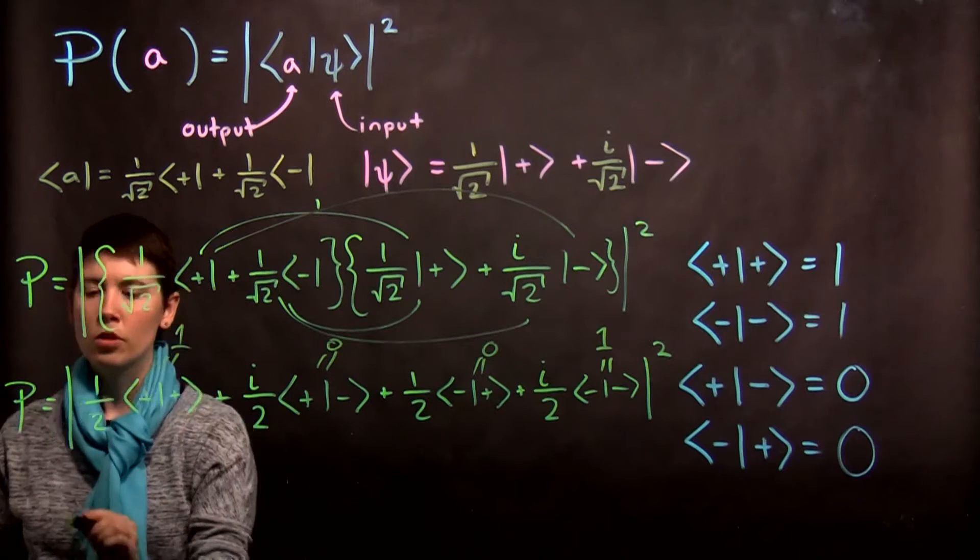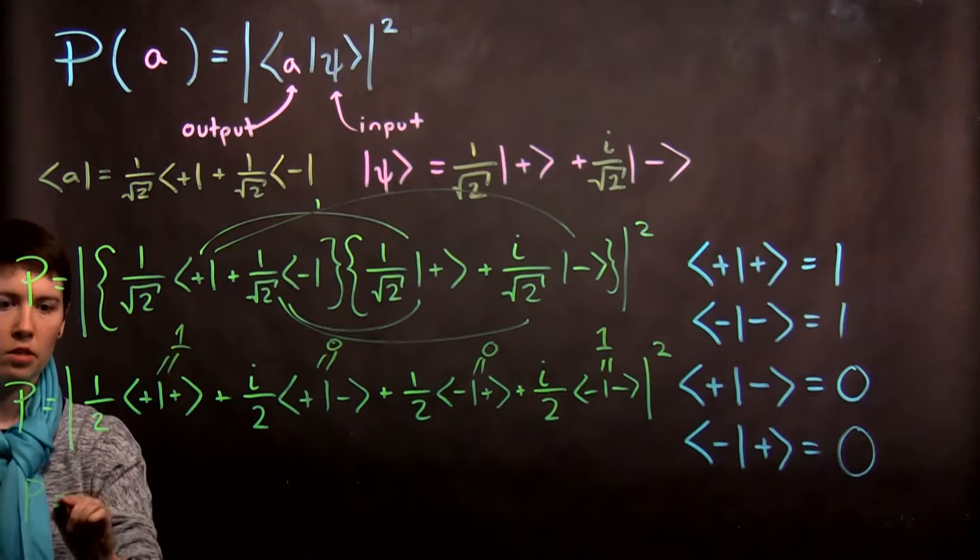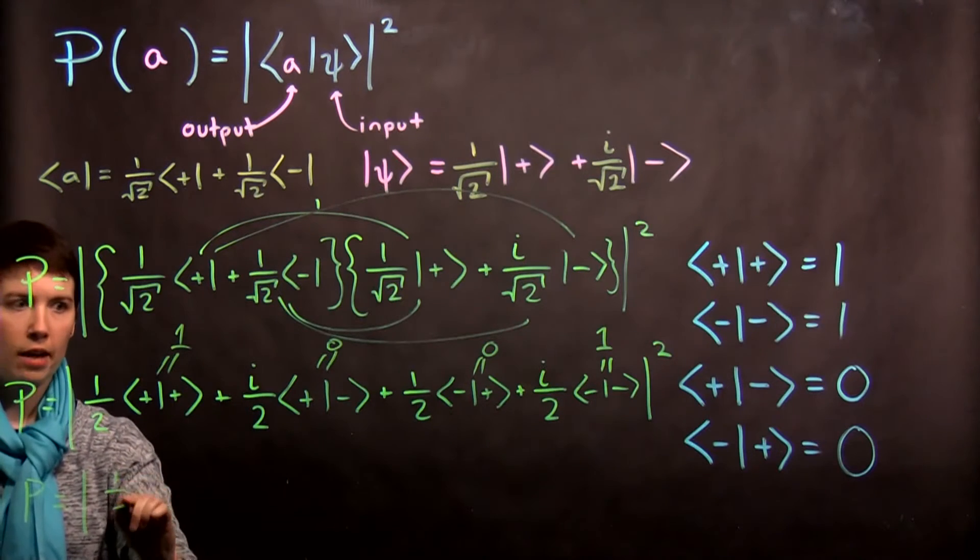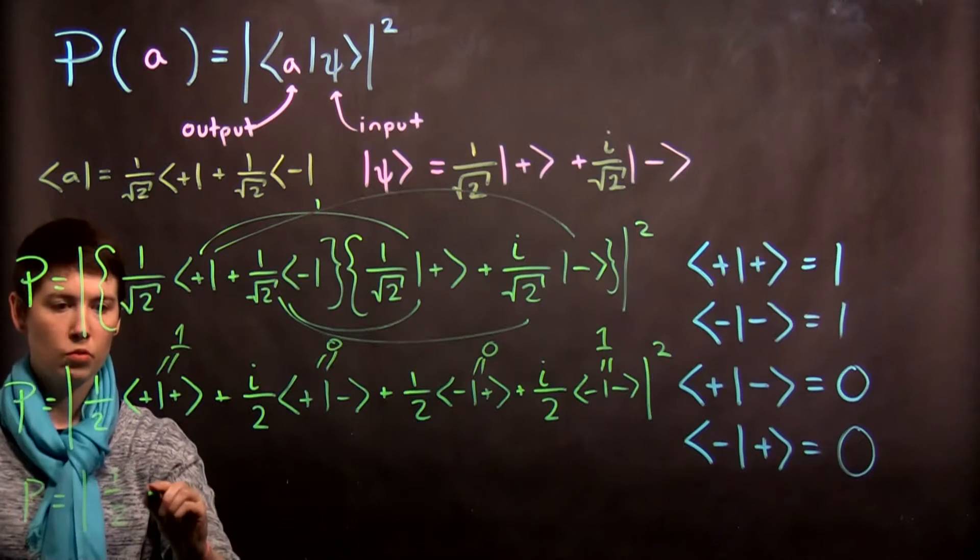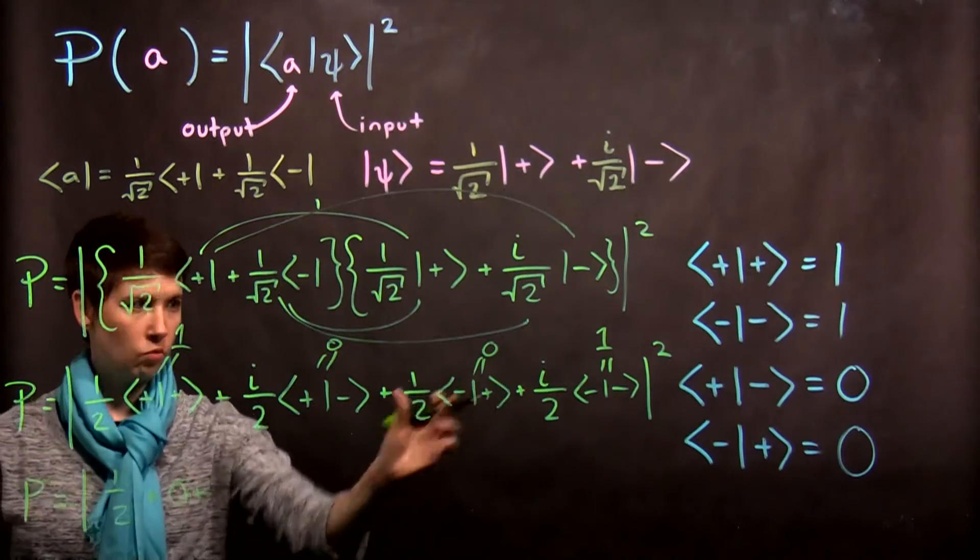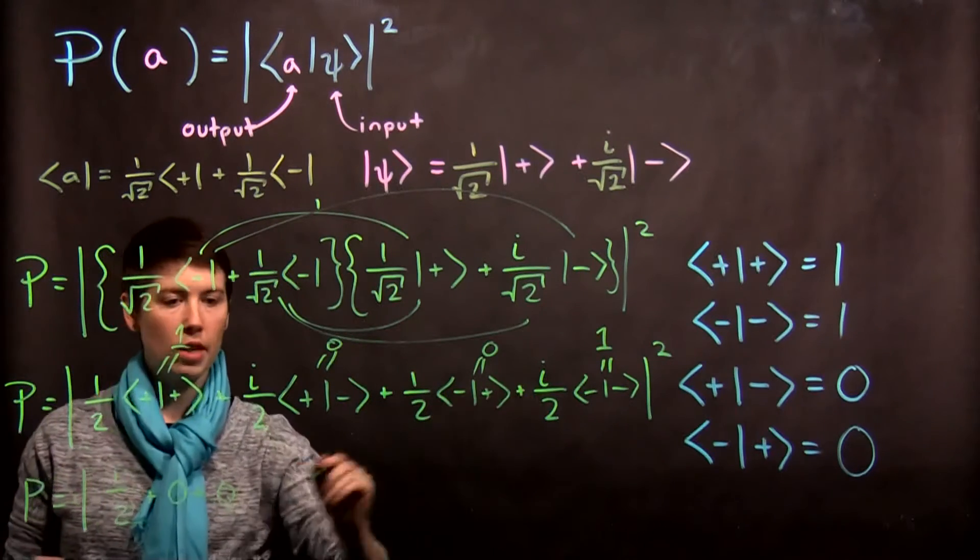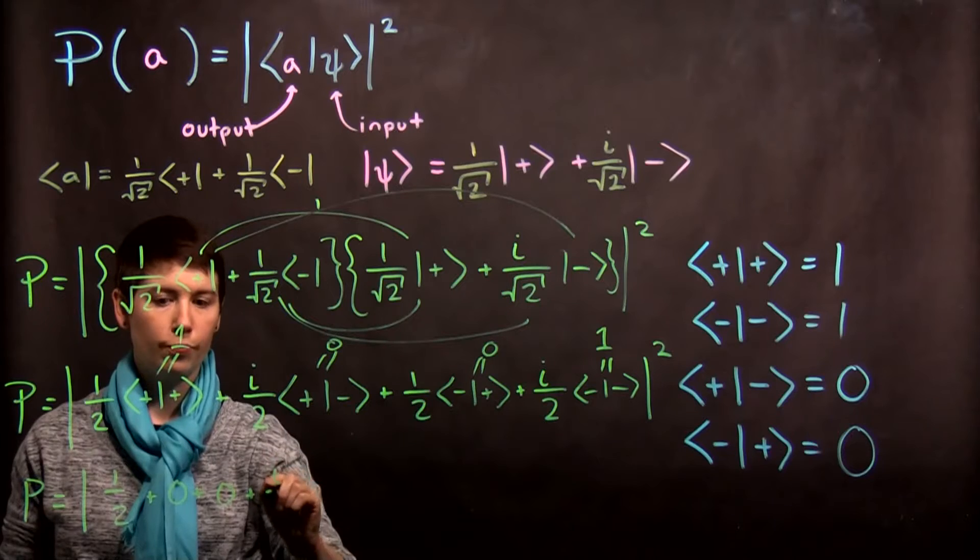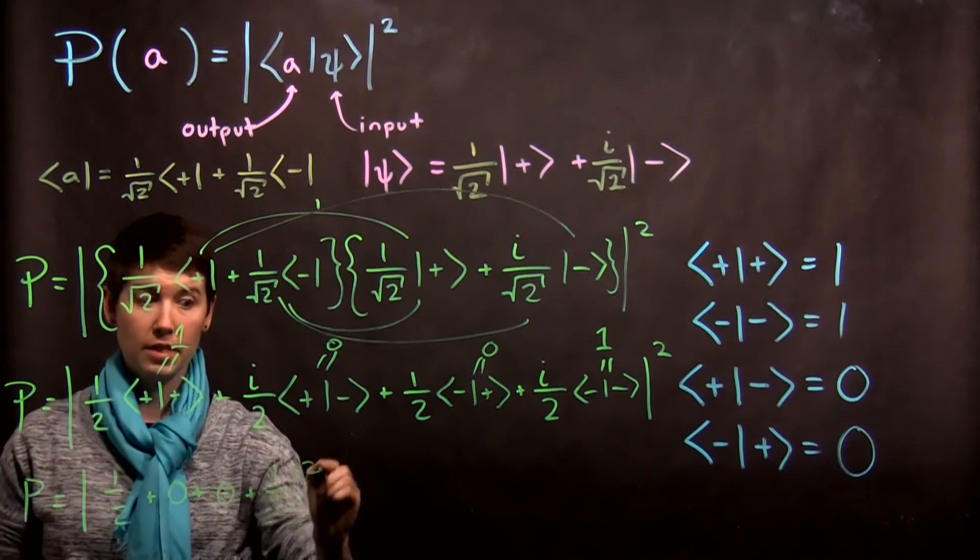Plus with plus is one. So our probability then, I now just have one half plus zero. So I'll explicitly write that out. Plus zero. And then plus i over two quantity squared.